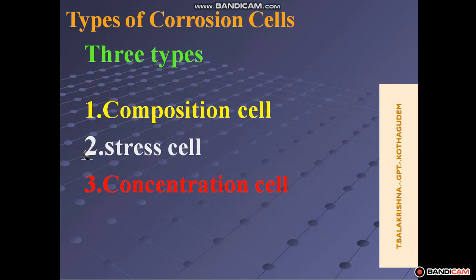Three types of galvanic cells are formed during electrochemical corrosion. They are: Composition Cell, Stress Cell, and Concentration Cell.